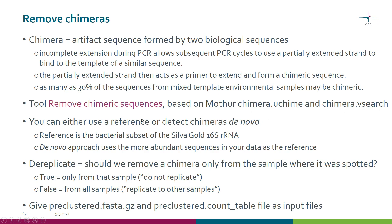In this tool you need to make several choices. One choice is between the method: uchime or vsearch. You also need to choose whether you want to use a reference database or detect chimeras de novo. The reference in Chipster is the bacterial subset of the SILVA gold 16S ribosomal RNA set. If you go for the de novo approach, the tool will use the more abundant sequences in your data as the reference.